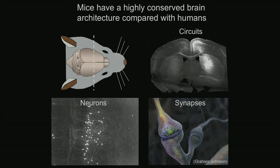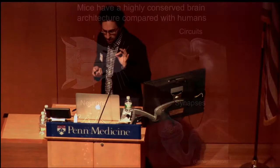As you zoom in to the level of neurons, you can see the wispy dendrites where synapses are formed. The conservation actually gets more and more striking at finer scales, such that when you do electron microscopy of synapses from a human and a rodent, everything looks exactly the same. This gives us the power to model autism disorders and get at the genetic underpinnings.